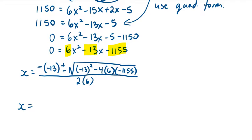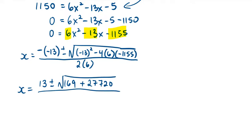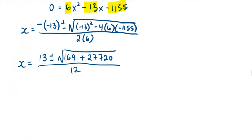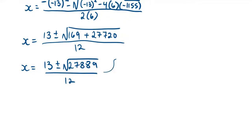Simplifying: x equals 13 plus or minus the square root of 169 plus 27,720 — the double negative gives a positive — all divided by 12. Continuing, 169 plus 27,720 is 27,889. We split into two parts: with the plus, x equals positive 15; with the minus, x equals negative 12.8. We reject negative 12.8 because we cannot have negative dimensions.